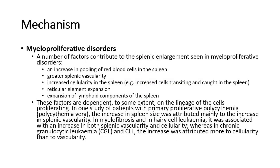Next we look at myeloproliferative disorders and hematological causes. A number of factors contribute to the splenic enlargement seen in myeloproliferative disorders: an increase in pooling of red blood cells in the spleen, greater splenic vascularity, increased cellularity in the spleen, reticular element expansion, or expansion of lymphoid components of the spleen. These factors are dependent, to some extent, on the lineage of the cells proliferating. In polycythemia vera, the increase in spleen size was attributed mainly to increased splenic vascularity. In myelofibrosis and hairy cell leukemia, it was associated with increases in both splenic vascularity and cellularity. Whereas in chronic granulocytic leukemia and CHIA, the increase was attributed more to cellularity than to vascularity.